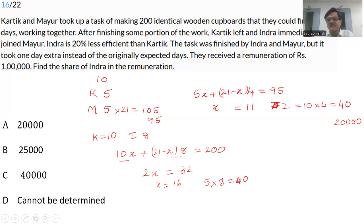Whatever we do, if I make the entire equation in variables, whatever happens, Indra will always turn out to have 40 units. He will always be making 40 cupboards. And that would give him a share of 20,000 rupees every time, whatever be the efficiencies of Karthik and Mayur. It doesn't matter. See how wonderfully a question has been set. The answer is option A, 20,000 rupees.